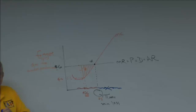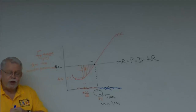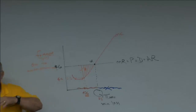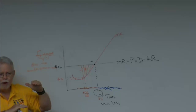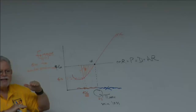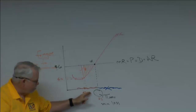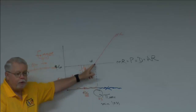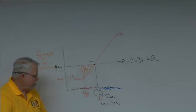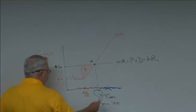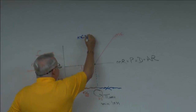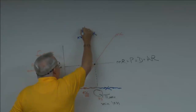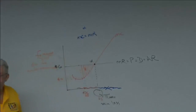Questions will come along and say: if you are producing in the range where marginal revenue exceeds marginal cost, what should you do? Expand production, increase production, up to the point where they equal each other. What's going on where marginal cost equals marginal revenue? That's point alpha.